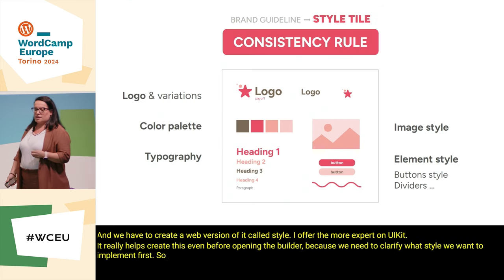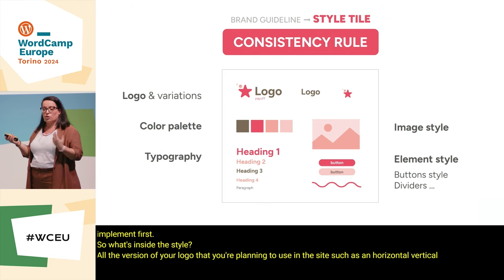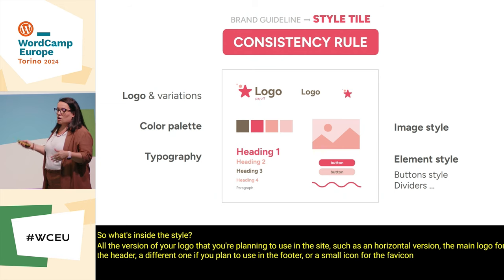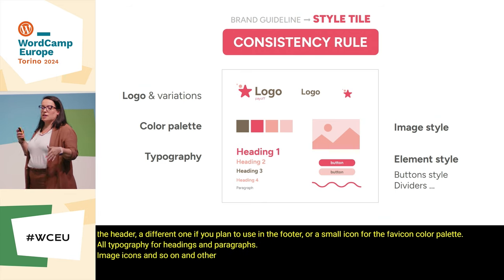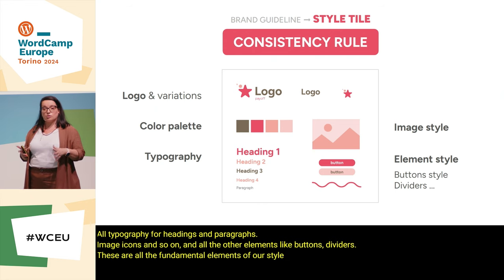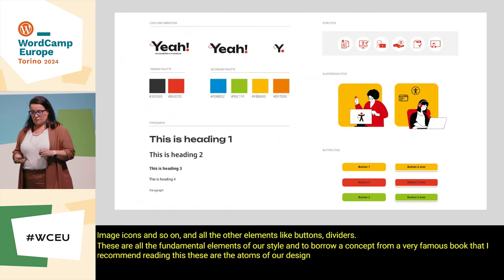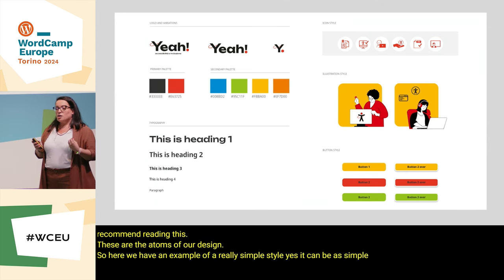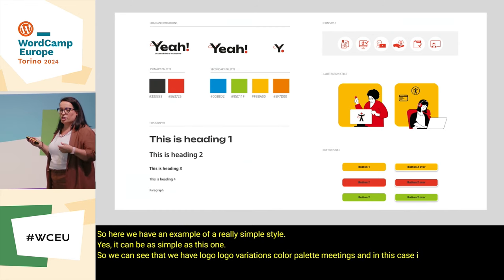So what's inside a style tile? All the versions of your logo that you plan to use on the site — such as a horizontal version, the main logo for the header, a different one for the footer, or a small icon for the favicon. Also the color palette, all typography for headings and paragraphs, images, icons, and all other elements like buttons and dividers. These are all the fundamental elements of our style. To borrow a concept from a very famous book I recommend reading, these are the atoms of our design. Here we have an example of a really simple style tile — it can be as simple as this.